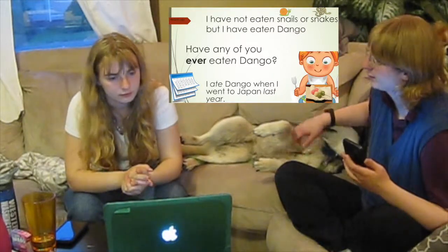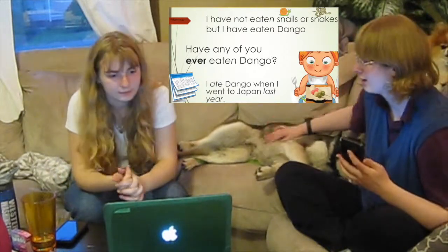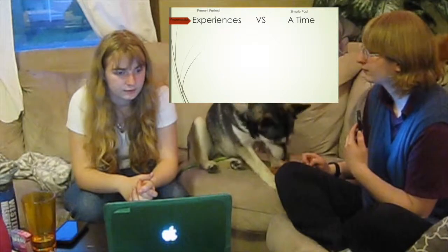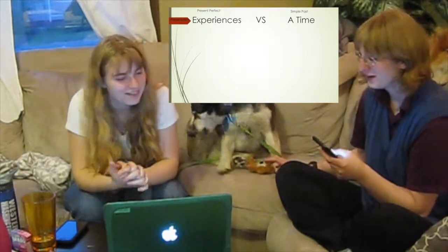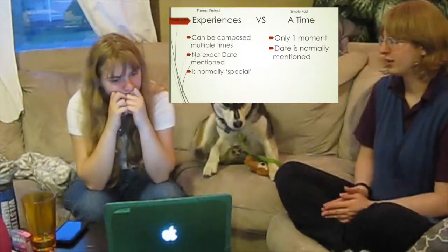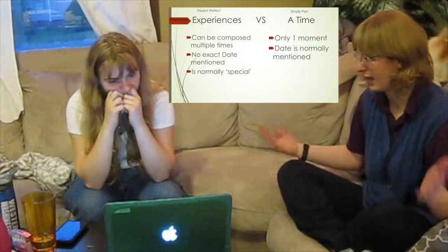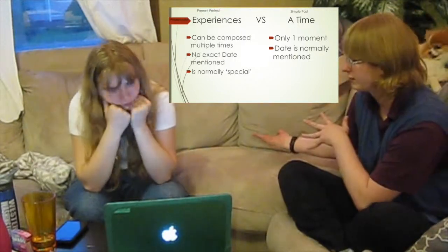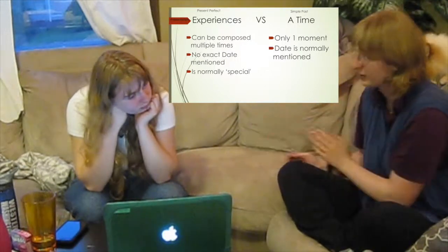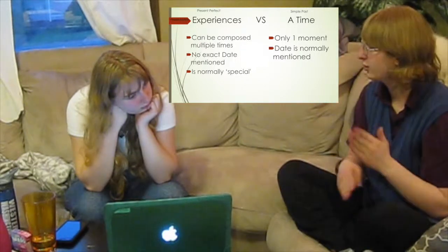Do you know which one is a point of time? The one that mentioned time. Yes. Can you think of any other differences that an experience has compared to a point in time? An experience could be composed of multiple instances — it's not necessarily that you had dango once; it could be five times. While a specific point of time, you're talking about one moment. One specific section. And the date is normally mentioned in the sentence. With an experience, you don't mention the date.